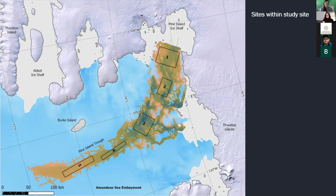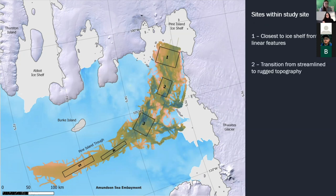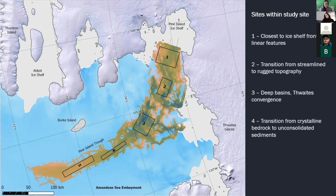Site one is the closest to the present-day ice shelf front, dominated by lineations and drumlin-like features, with plenty of sediment cover observable. Site two is where we see a transition from streamlined to more rugged topography. Site three is where we see really deep basins overlaid by sediment, and this is where the paleo bed of Pine Island and Thwaites meet. Site four is where we see a transition from crystalline bedrock to sedimentary strata, with the boundary right about here. Site five is where we see linear features interrupted by a grounding zone wedge.